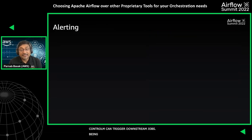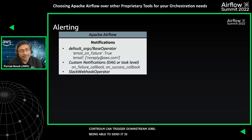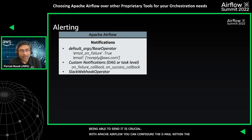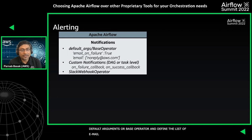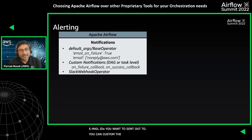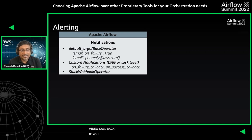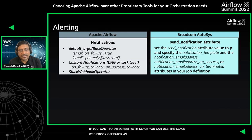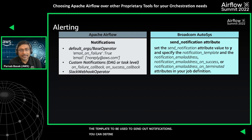Being able to send alerts on critical events is crucial. Within Apache Airflow, you can use the notifications module — configure the 'email_on_failure' attribute to true in the default arguments or base operator, define a list of email IDs, and define custom notifications at the DAG or task level using 'on_failure_callback' and 'on_success_callback'. You can also use the Slack webhook operator for Slack integration. For Broadcom Autosys, you set the 'send_notification' attribute to Y, specify a notification template, define notification email addresses, and configure when to send emails — for example, on job success or termination.